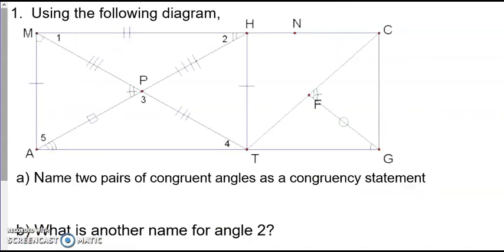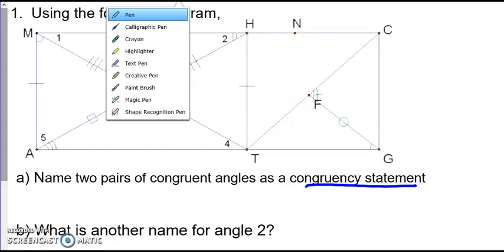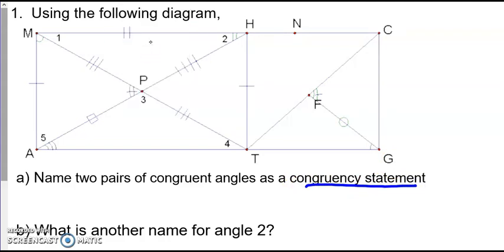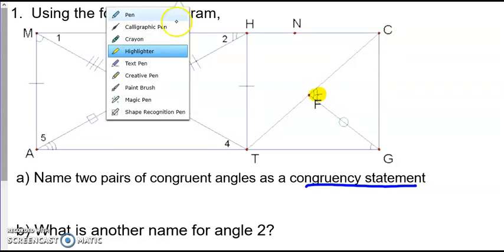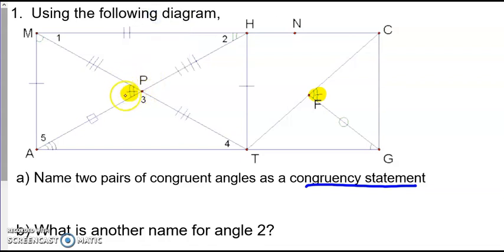Alright, so let's move on here. Using the following diagram, we want to name two pairs of congruent angles and use a congruency statement. So this is similar to what we did with segments. We are looking for lines or markings that are exactly the same. So here we have a marking, two squiggles with a line through it, so those two angles are congruent. And again, realize I cannot say angle P. I must use three letters. So I'll use M, P, A, and that is going to be the angle C, F, G.